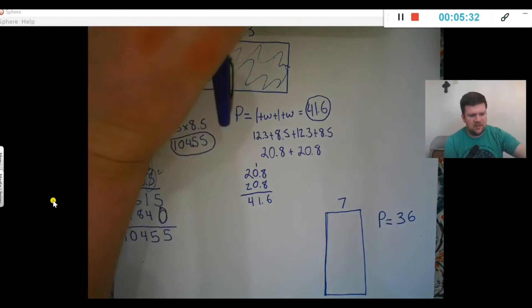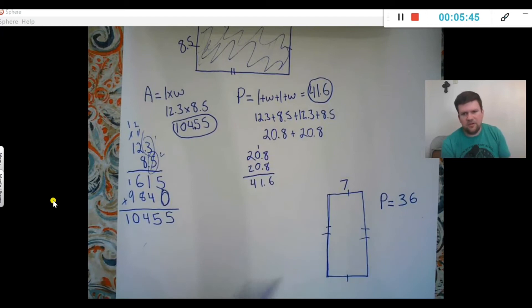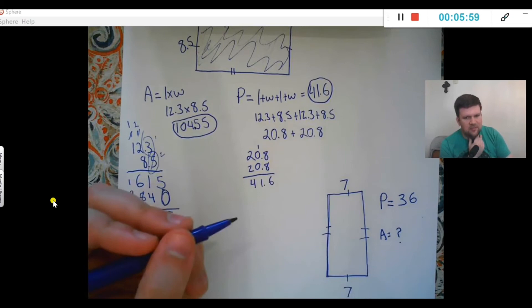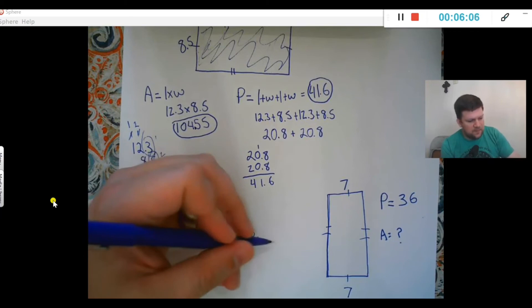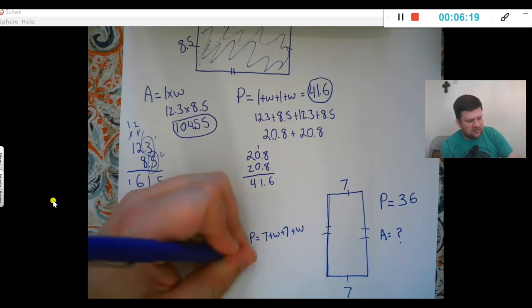I want to go through a quick example of another problem you could possibly see. You'll see a lot more in sixth, seventh grade on up, but you might have a rectangle that says this side is 7 and the perimeter is 36, and it wants to know what is the area. Here's how you would go about figuring that out: if this is 7, that means this side over here also has to be 7. So perimeter would be 7 plus width plus 7 plus width, and we know perimeter is 36, so that means 36 equals...